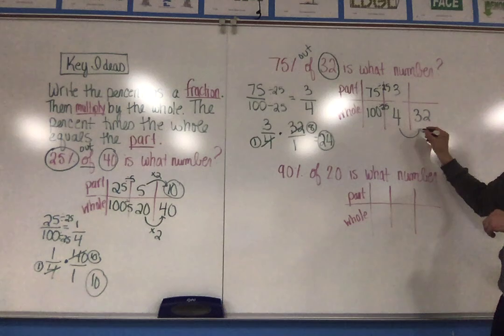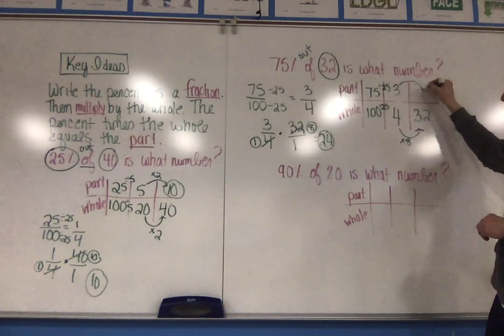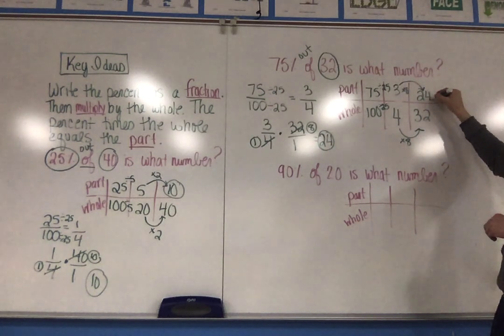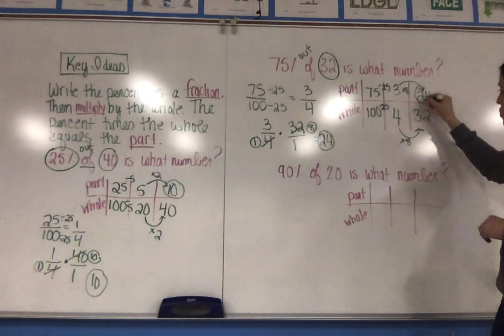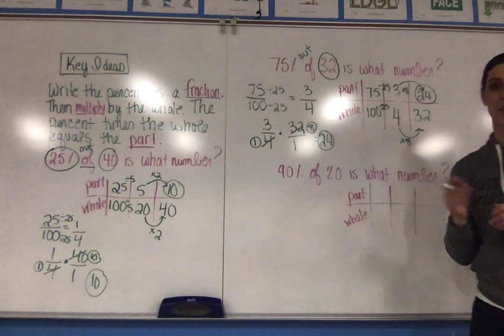Then I can see that 4 times 8 is 32. So to keep it equivalent, I also have to multiply 3 times 8, which is 24. Now you see that the whole is on the denominator. I have 24 as my part, so it matches what I found in the multiplication.